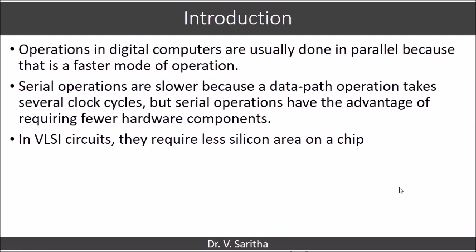Serial operations are slower because data path operations take several clock cycles. For each bit, we have to give 1 clock pulse. If it is parallel, all the operations in a single clock cycle will be completed.